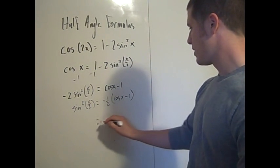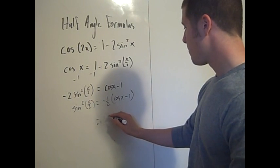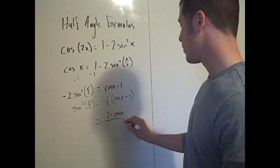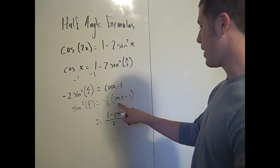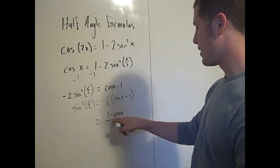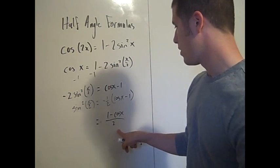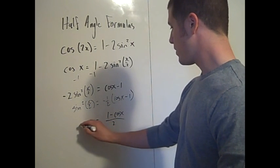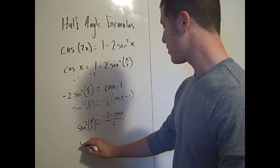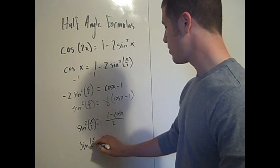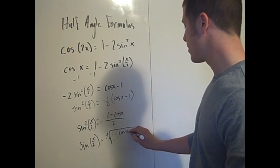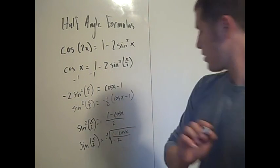This is the same as (1 minus cosine x) all over 2, since distributing the negative gives minus cosine x and positive 1, all over 2. Taking the square root of both sides, we have sine of x/2 equals plus or minus the square root of (1 minus cosine x) all over 2.